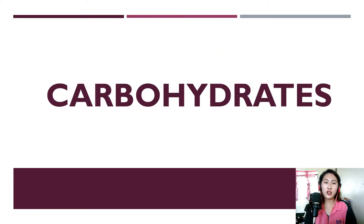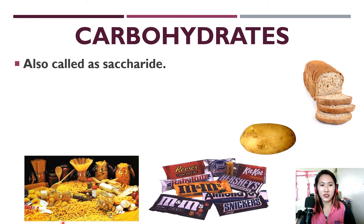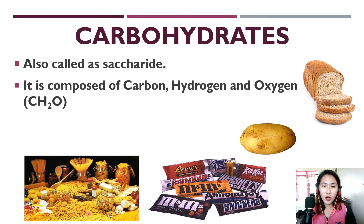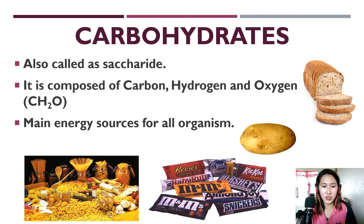The first biological macromolecule we will discuss is carbohydrates. Here are some foods that contain carbohydrates: pasta, chocolate, potato, and bread. Carbohydrates, also known as saccharide or sugar, are composed of carbon, hydrogen, and oxygen with a ratio of 1:2:1, which can be illustrated in the formula CH₂O. The main function of carbohydrates is that they are the main energy source of all organisms, and they are also a structural component for plants.